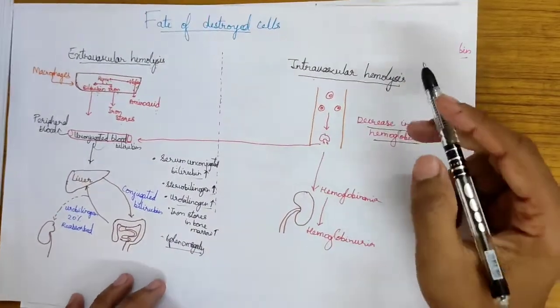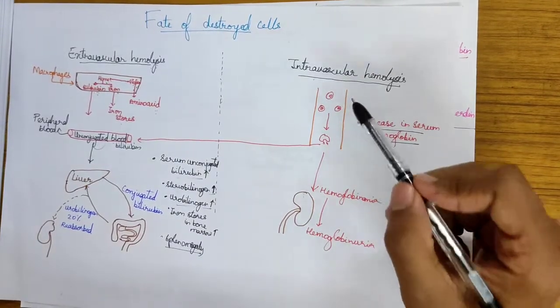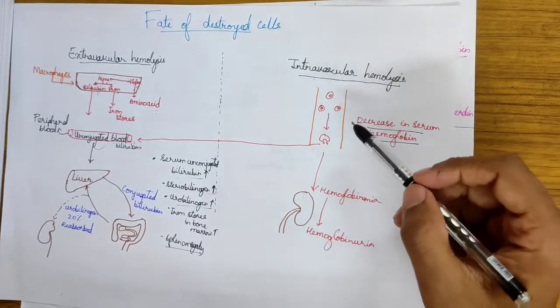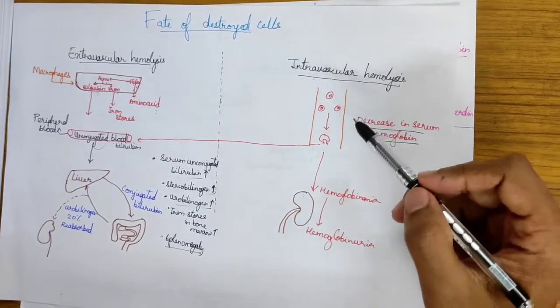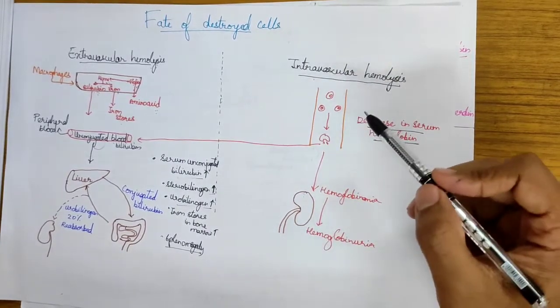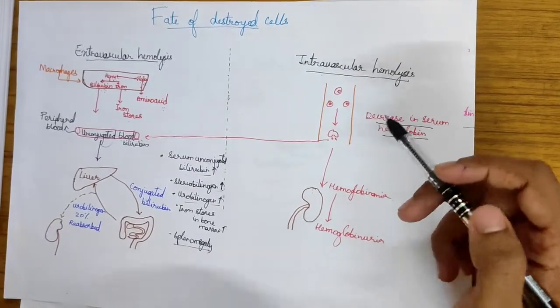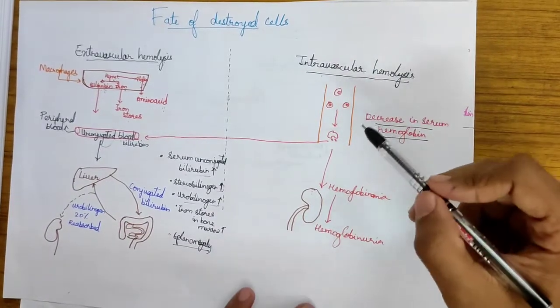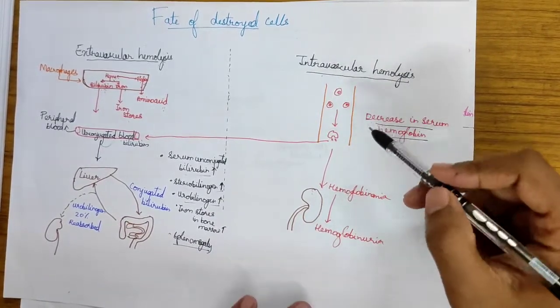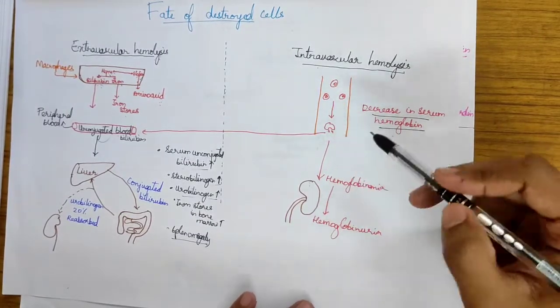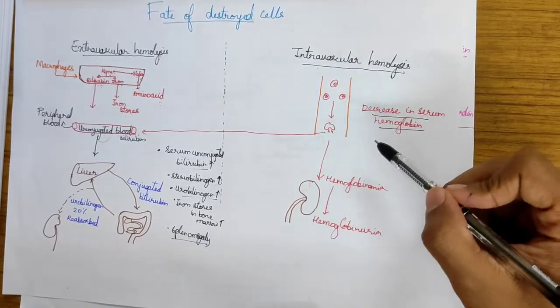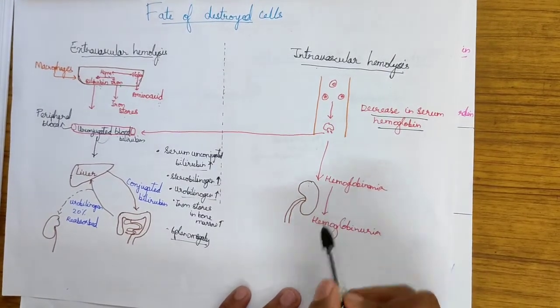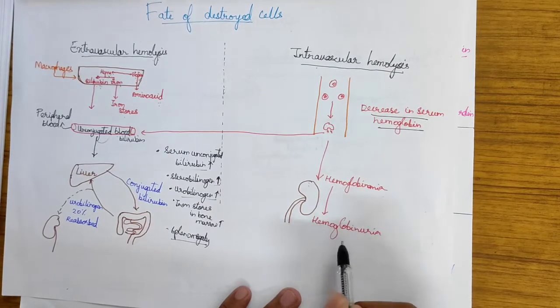Talking about intravascular hemolysis, when the RBCs are destroyed inside the vascular vessels, the hemoglobin escapes into the blood and forms a relationship with haptoglobin. Haptoglobin is a protein in the blood which binds with the hemoglobin and makes it go to the liver. When the hemolysis is more, the hemoglobin is increased in the blood and it escapes into the kidney, causing excess hemoglobin in the body also called hemoglobinemia, and some amount of hemoglobin also escapes into the urine causing hemoglobinuria.